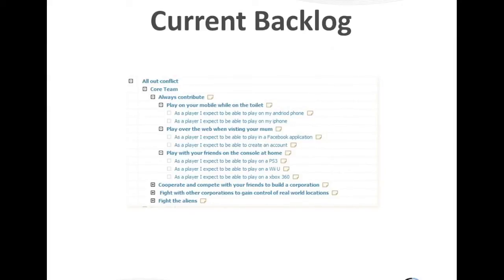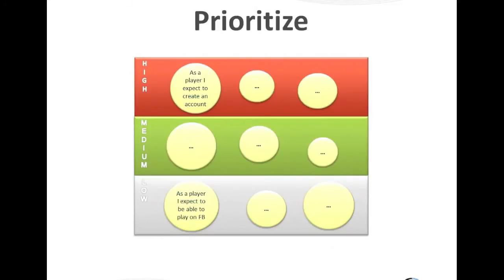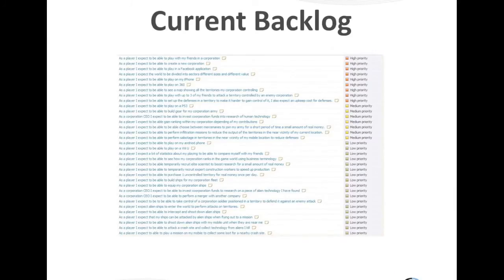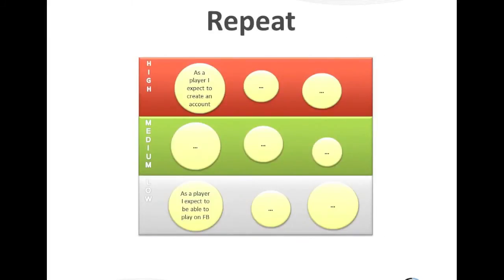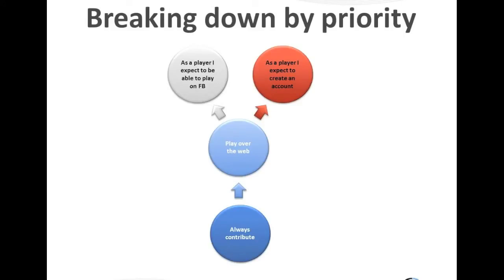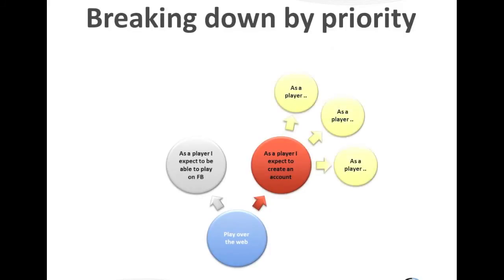We keep adding more information to the backlog, and now it's time to start prioritizing what is most important. We said that 'as a player I expect to create an account' is a high-priority item, whereas the mechanics of a Facebook application are not that important right now. We can look at the backlog in a prioritized manner and start attacking it. We add details to account creation while leaving the Facebook creation for later, until we get there.